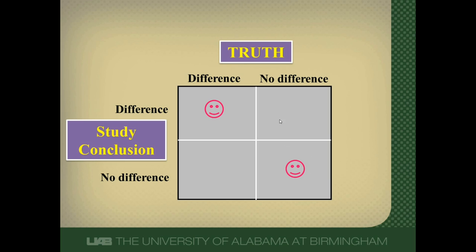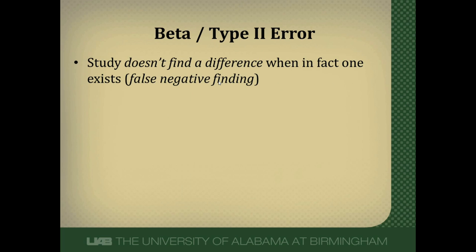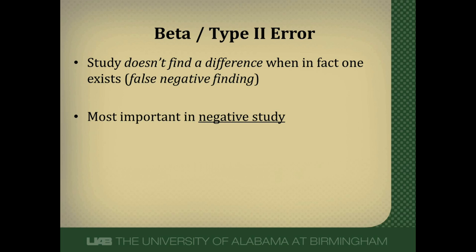The problem is when we make one of two errors. I'm not going to focus on a type 1 or alpha error — I'm only going to focus in this video on beta or type 2 errors. A beta or type 2 error occurs when a study finds no difference when in fact one truly exists. Beta error is essentially a false negative study — the study doesn't find a difference when one truly exists. I think about beta or type 2 errors in negative studies when I expect to see a difference, or when the finding suggests a difference but doesn't reach statistical significance.